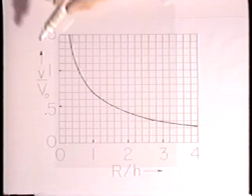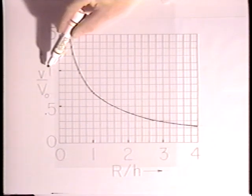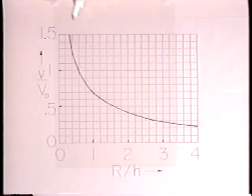Here is the normalized voltage predicted by Faraday's integral law as a function of normalized spacing. Our data point goes here.